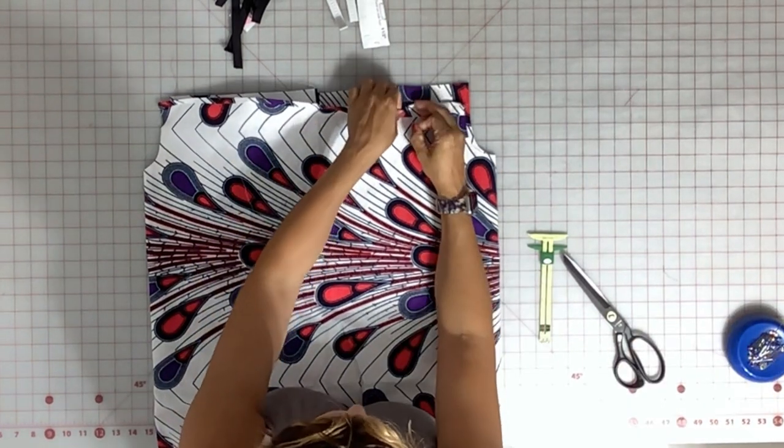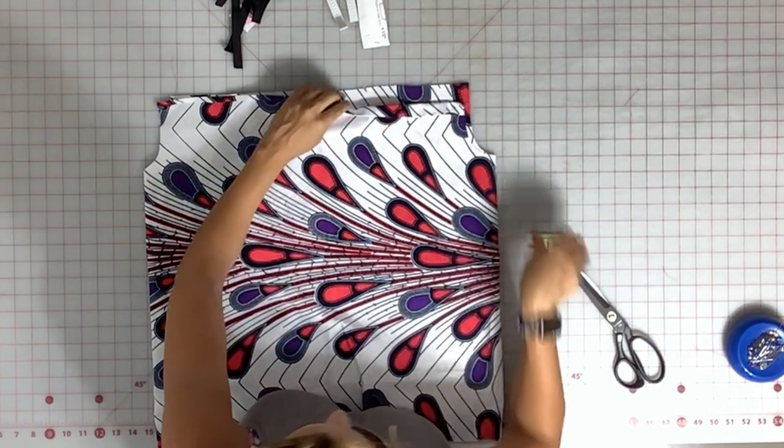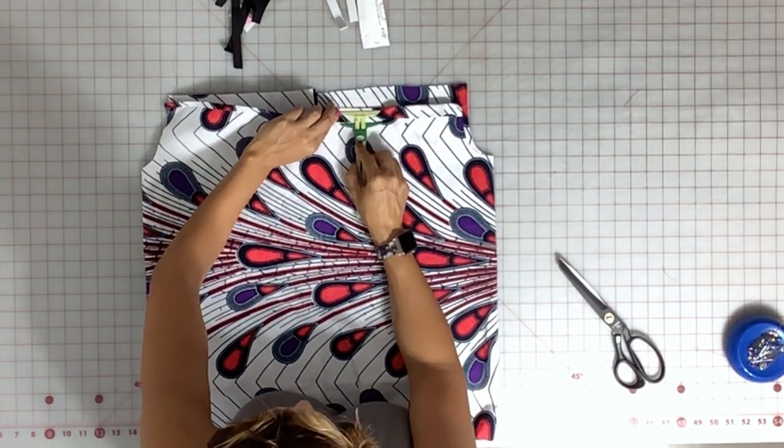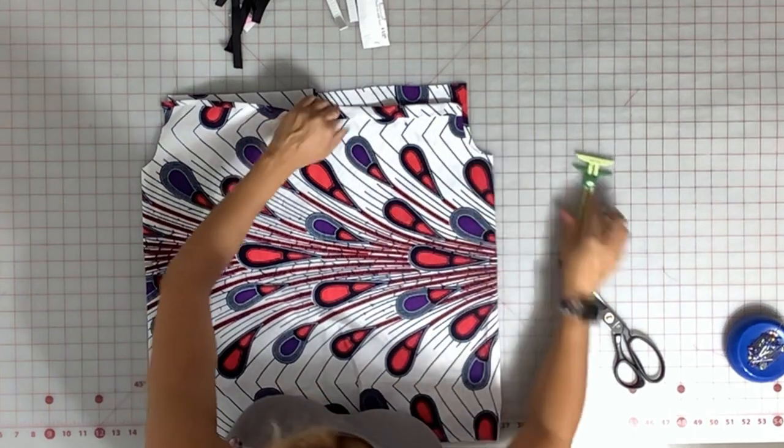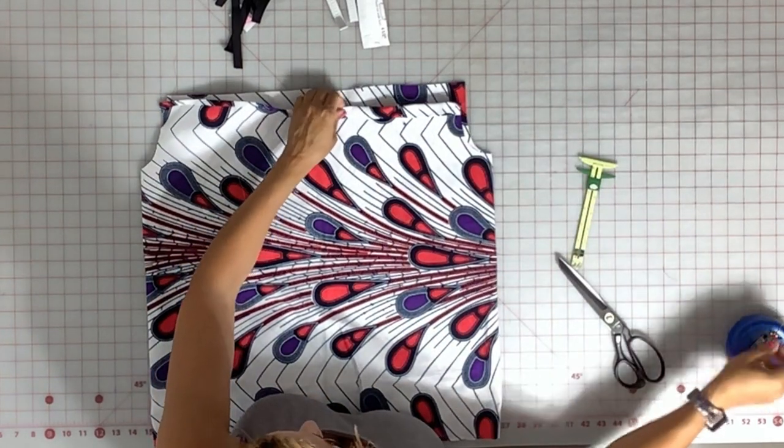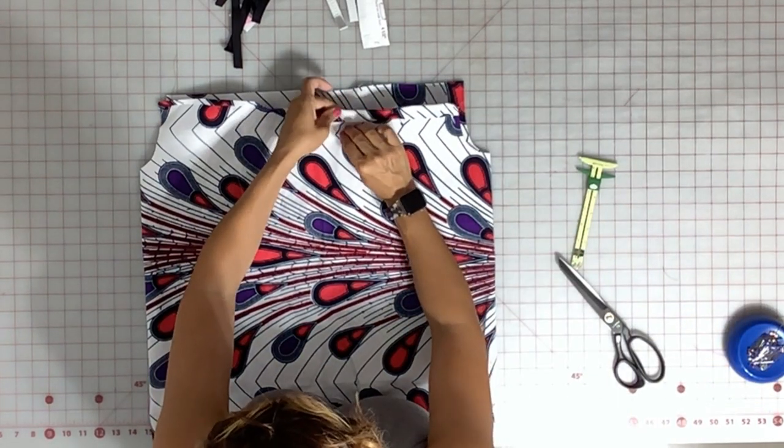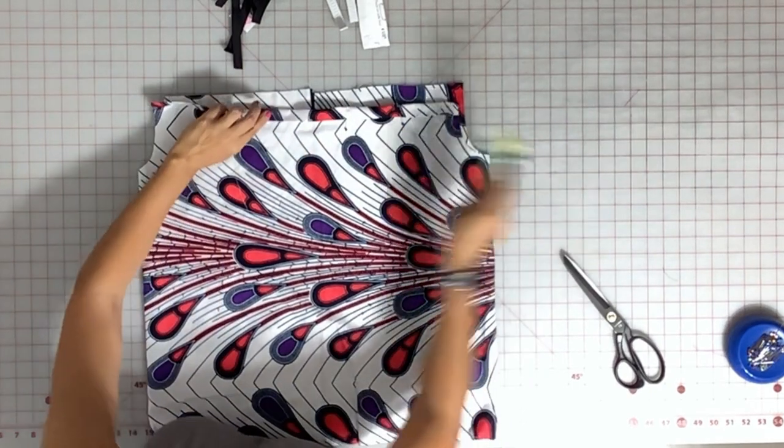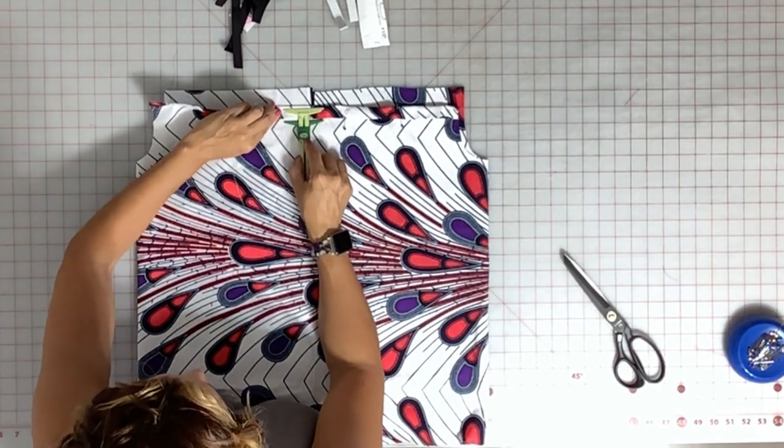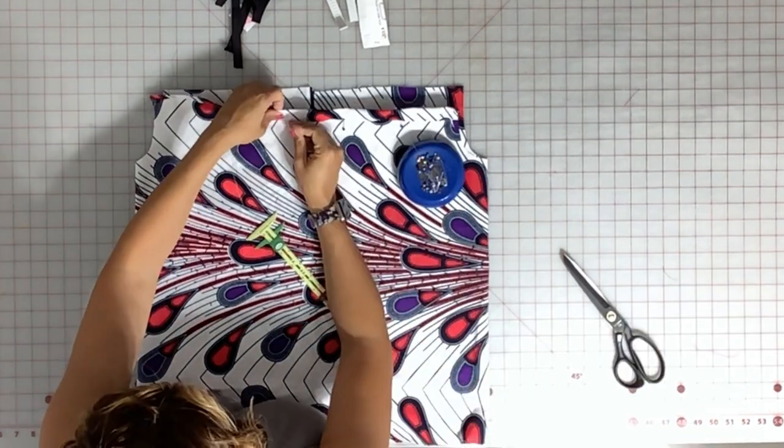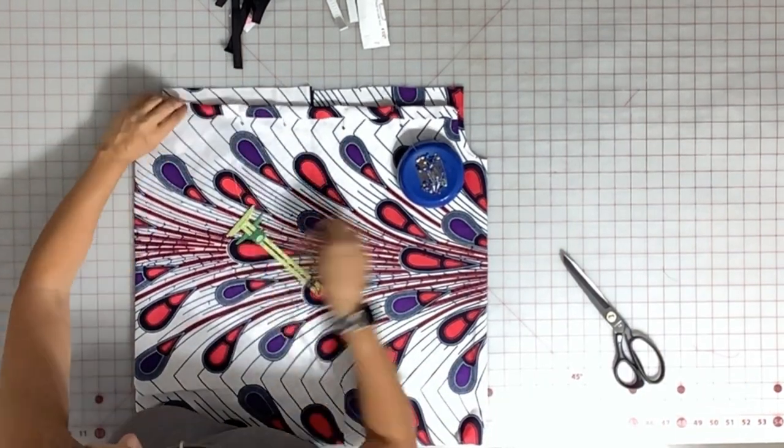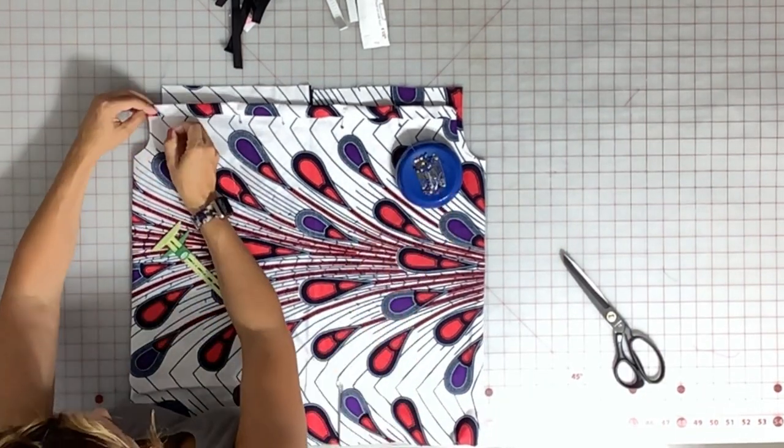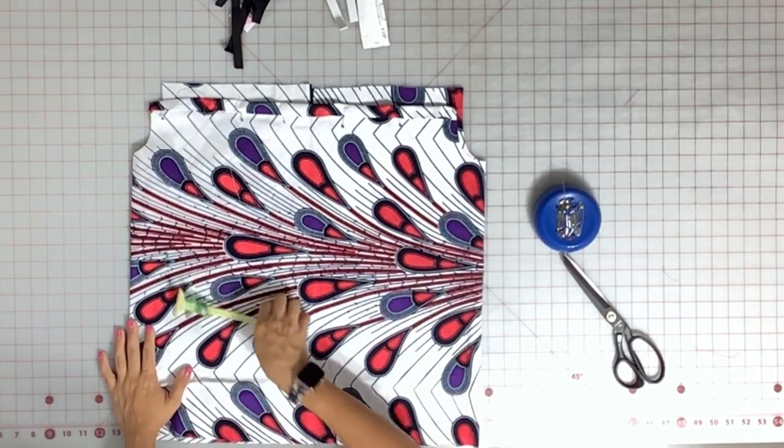If you make it too snug, it's not going to work. If you're using three quarters inch elastic, I recommend you make a one inch wide casing. If you're using quarter inch elastic, I recommend you do a half inch casing. Now that we're done, go and get it pressed.